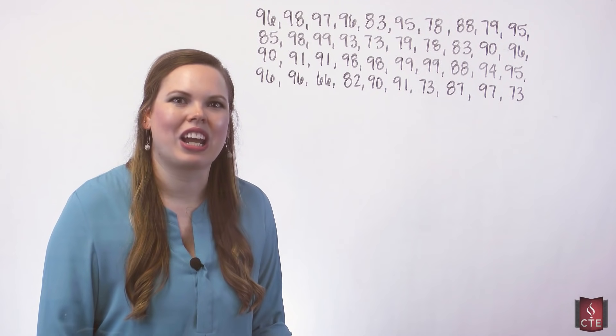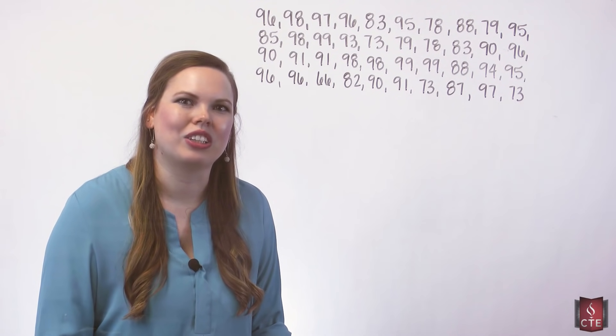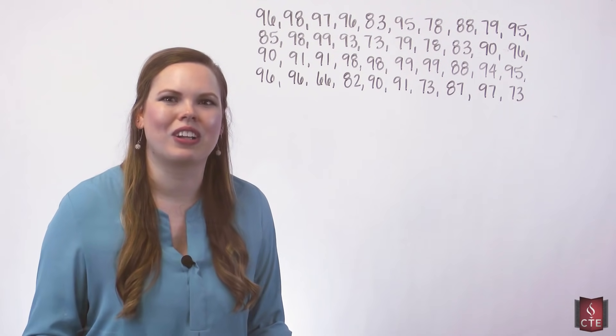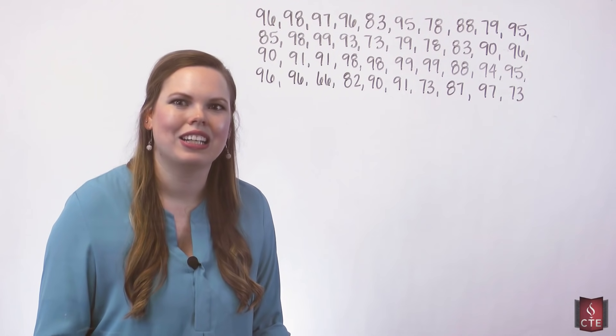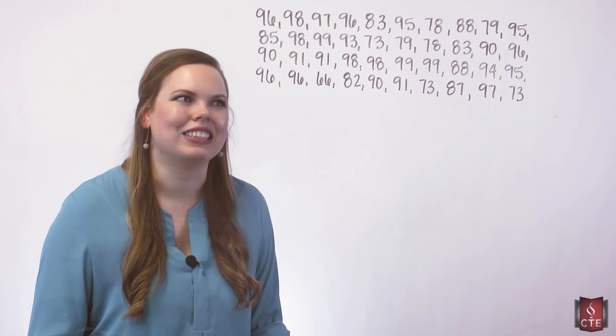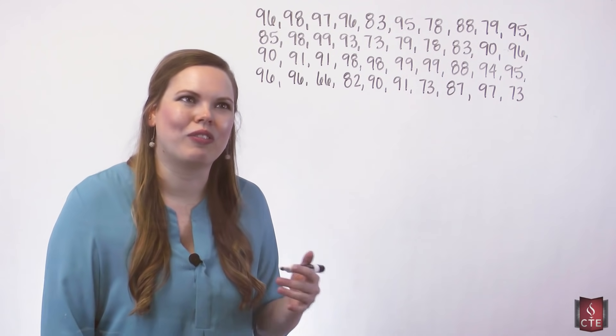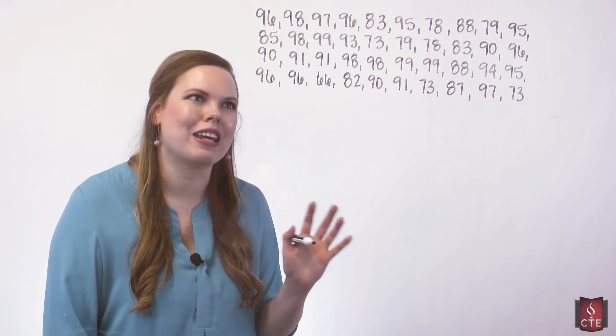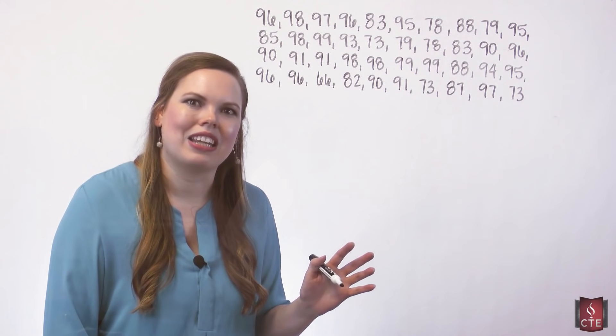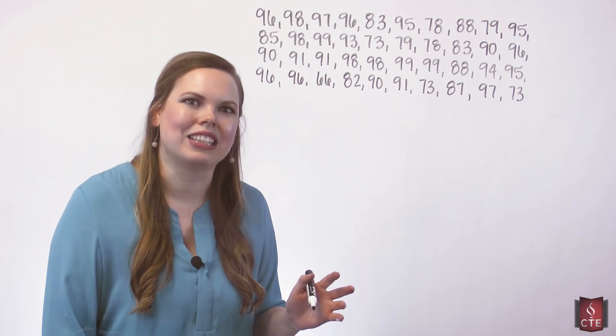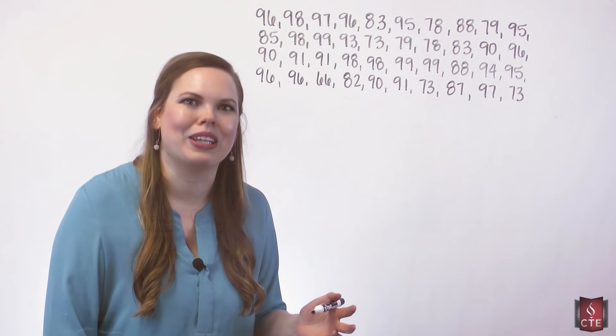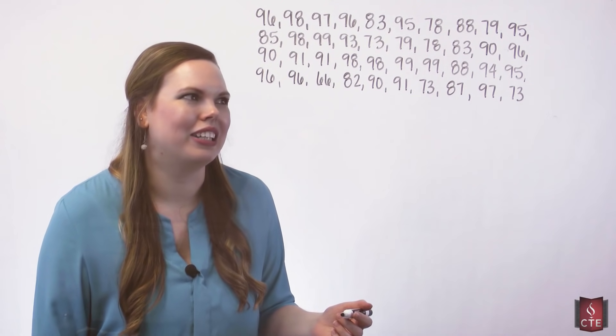The first thing that you want to decide when you construct a frequency distribution is the number of classes that you want. To kind of get there, we first look at the range and then we think about the amount of data that we have and how big we want these classes to be and what their class width is. We will go through that process now.